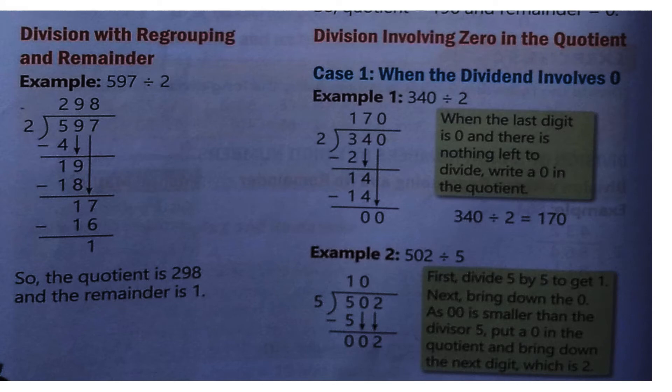Now division with regrouping and remainder. So 597 divided by 2. We start with 5. Since 5 is not in the table of 2, we take 4. So 5 minus 4 is 1, and bring down 9, making it 19. There is no 19 in the table of 2, so we take 18: 2×9=18, so 19 minus 18 is 1. Then bring down 7.